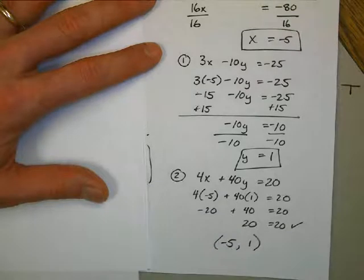20 equals 20, and so the problem checks. And my answer is negative 5, comma 1.